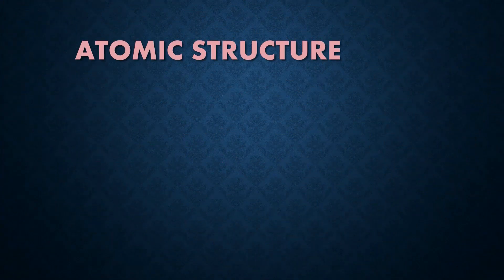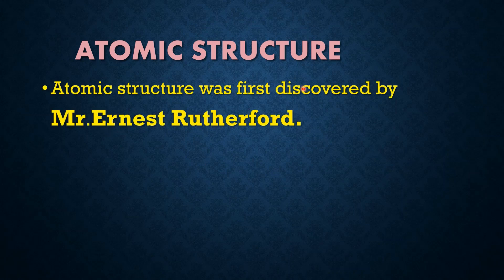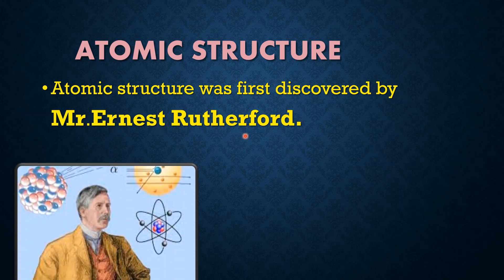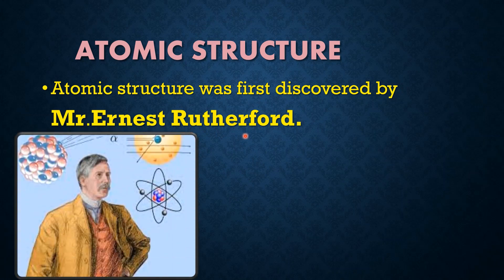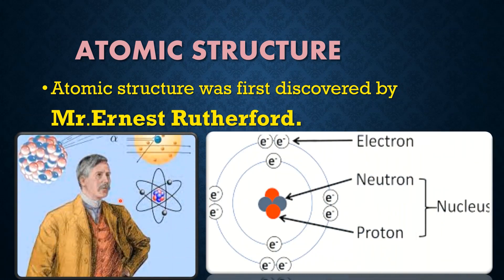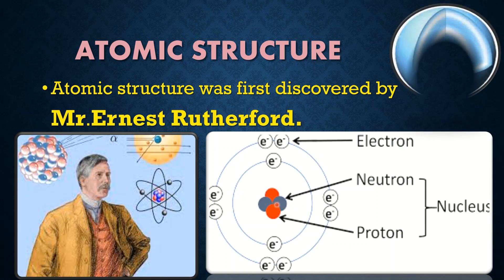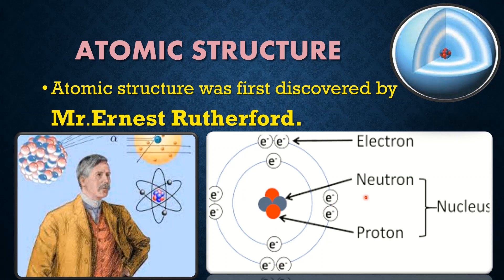Next, we look at atomic structure. The atomic structure has a nucleus at its center, which is made up by the combination of protons and neutrons. Surrounding the nucleus is the space in which electrons move.